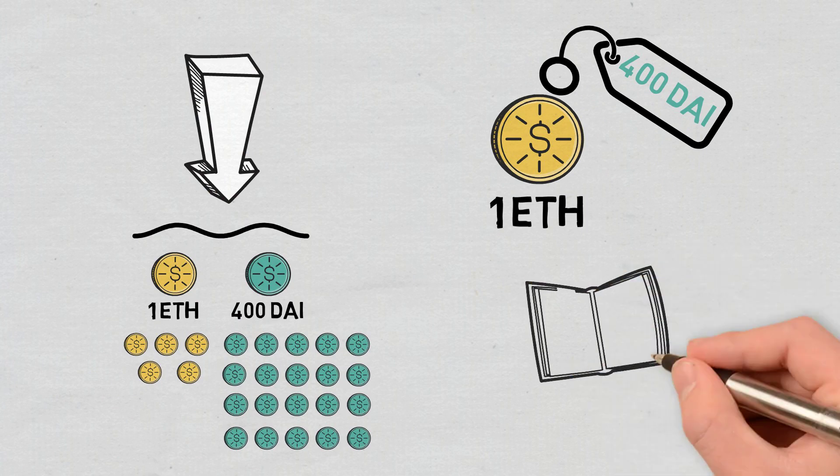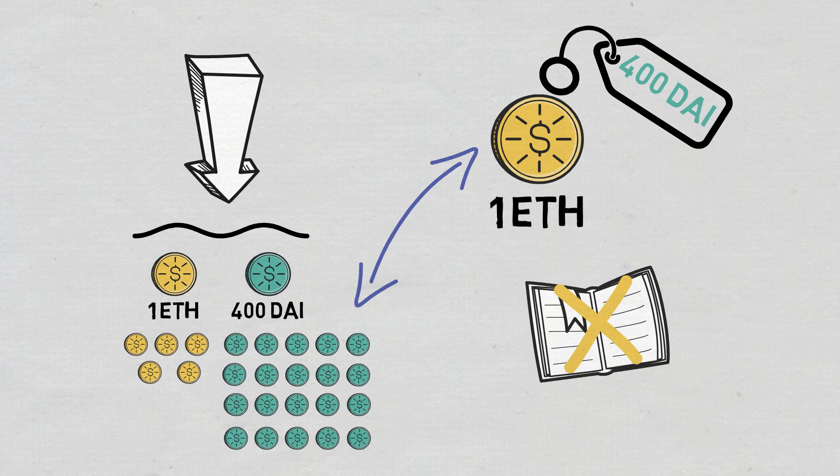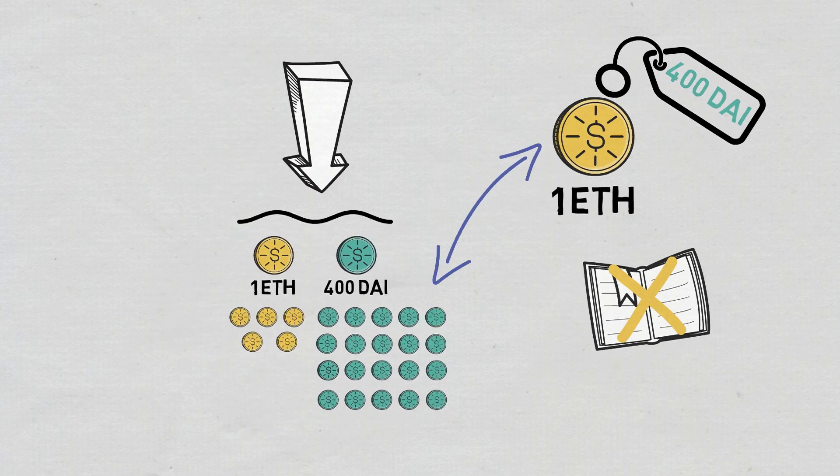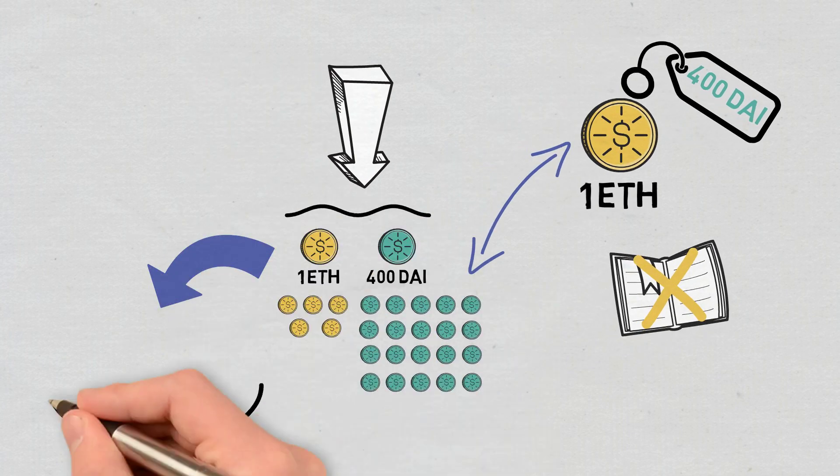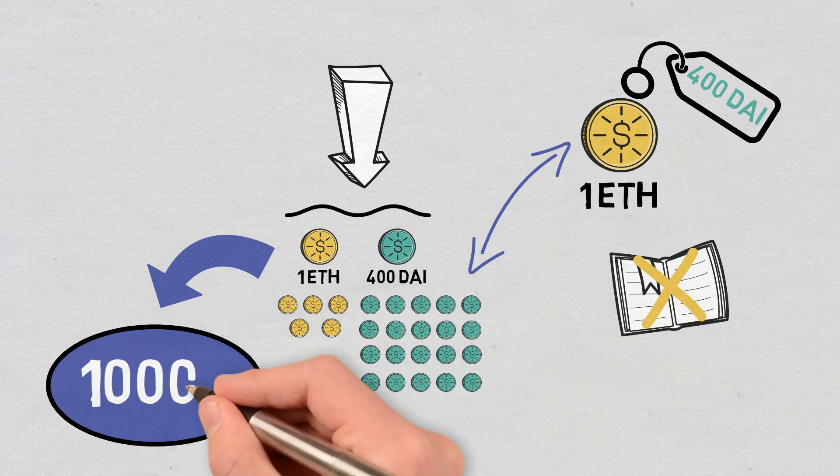Since AMMs don't work with order books, the price of the assets is given by their ratio in the pool. In short, if the liquidity remains constant in the fund at 10,000, the ratio of the assets in it changes.